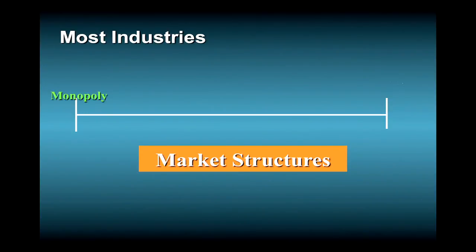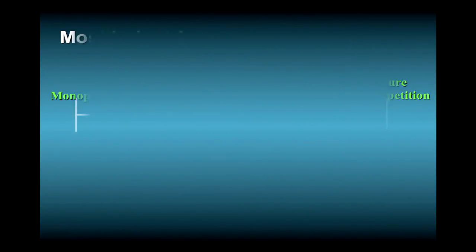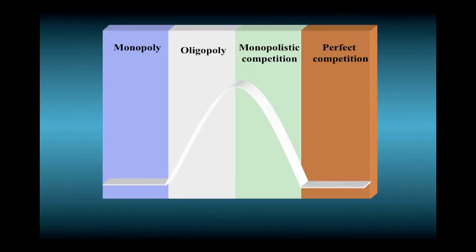Pure monopoly, together with the polar case of pure competition, are the exceptions, not the rule in our economy. The market structures of most industries fall somewhere in between these two extremes and can be classified either by monopolistic competition or oligopoly. This figure illustrates the continuum of market structures based on one key element: the number of firms in the industry.